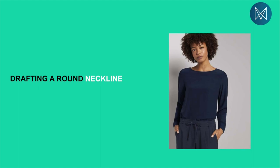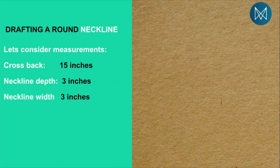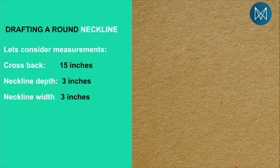In this case we're going to consider the following measurements. The cross back - the behind part of the body - is 15 inches. The neckline depth is 3 inches and the neckline width is 3 inches. Now these measurements are not limited to this example; you can have a neckline depth which is deeper than 3 inches and a neckline width which is wider than 3 inches, as we shall see when we manipulate different styles of necklines.